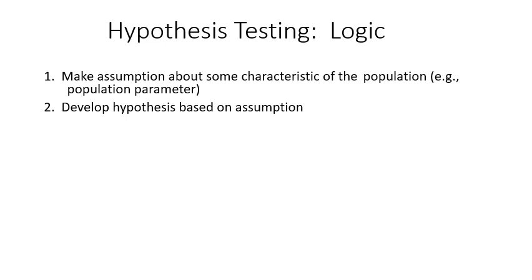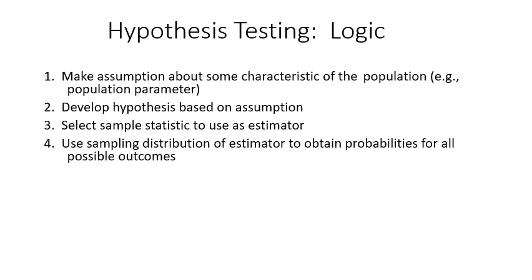For hypothesis testing there are seven logic steps, and next week when we start actual hypothesis testing I'll show you the eight steps we use. What are these seven logic steps? First, we make an assumption about a characteristic of the population parameter. Our assumption was that we think Detroit Mercy students are younger. So we develop a hypothesis based on this assumption — our hypothesis is that the average age of Detroit Mercy students is younger than 22, which is the national average.